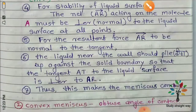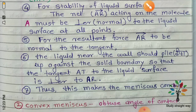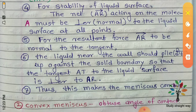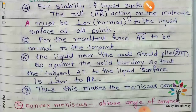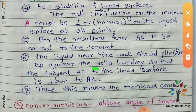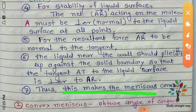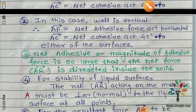For the resultant AR to be normal to the tangent, the liquid near the wall must be pulled up against the solid boundary, so that the tangent T of the liquid surface is perpendicular to AR, and thus it makes the meniscus concave.